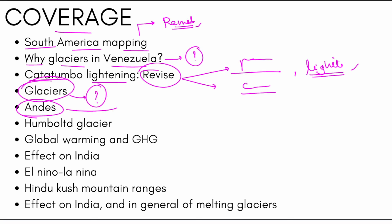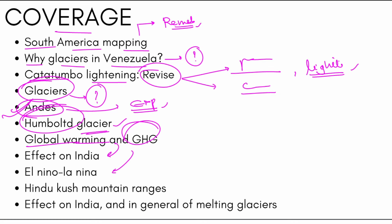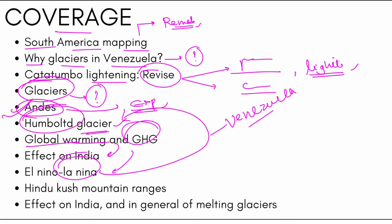Then let's talk about what are glaciers. What are the Andes mountains — what is the expansion of the Andes, in which countries they are present — this can be a question. Then the Humboldt glacier, where it was located. Finally, global warming and the GHG effect on India, what is the El Niño and La Niña phenomena, responsible for the losing of the Humboldt glacier. Then the Hindu Kush mountain ranges near India and the effect of melting glaciers.